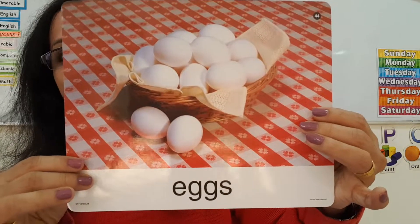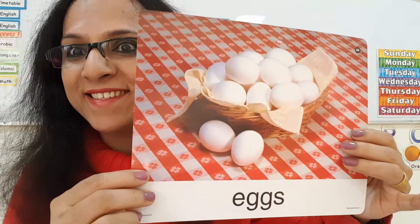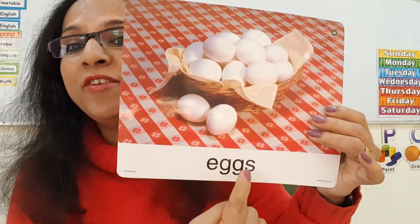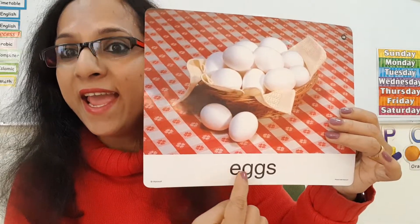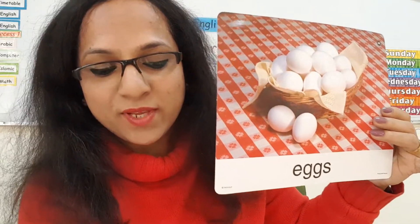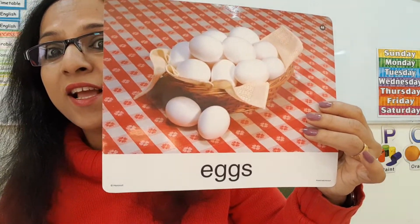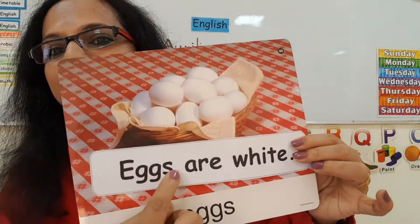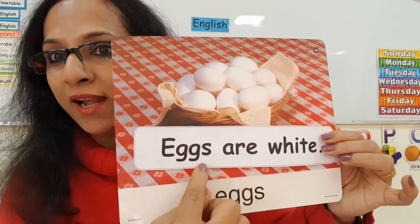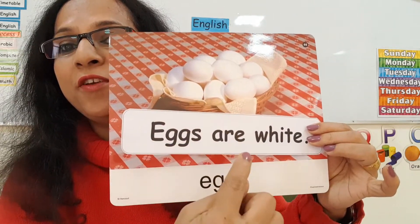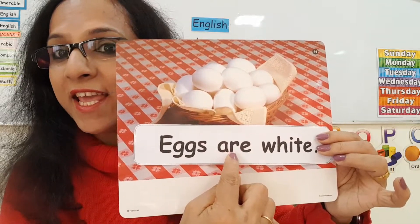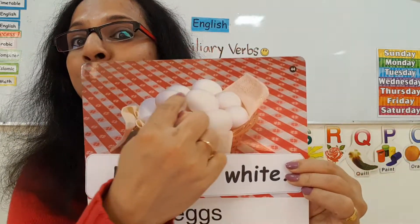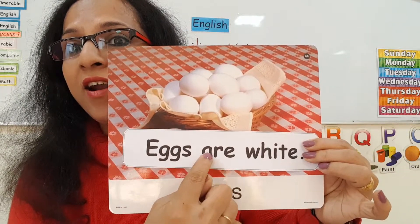Let's see a picture. What is this? These are eggs — not one egg, there are many eggs. If it is plural, we add S and say 'these are eggs.' What color are these eggs? White. So the sentence is: 'Eggs are white.' Because these are plural — many — we use ARE. IS will go with a singular object, but these are plural, so eggs ARE white.